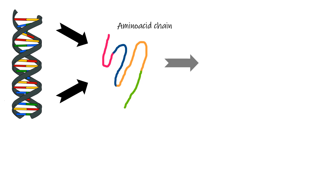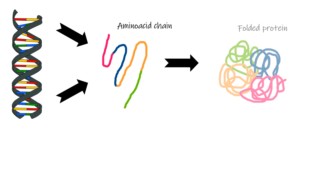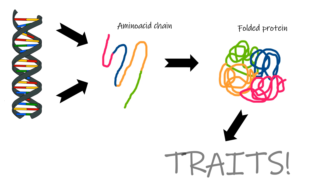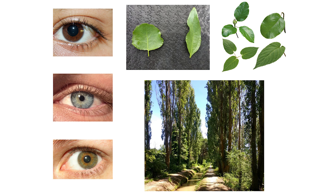Proteins, in turn, dictate virtually every reaction in the cell and thus are directly responsible for observable and measurable characteristics called phenotypic traits. A good example of this in humans is eye or hair color. In plants, some examples of these traits are height and leaf shape.